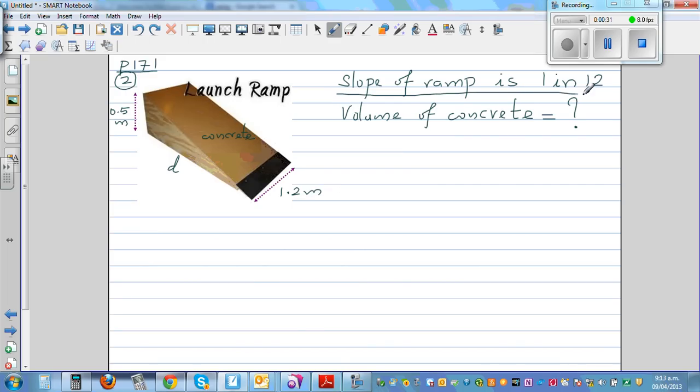The slope of the ramp is 1 in 12. What does that mean? This means that for every 12 meters of length, the ramp rises by 1 meter. That's what this ratio is.